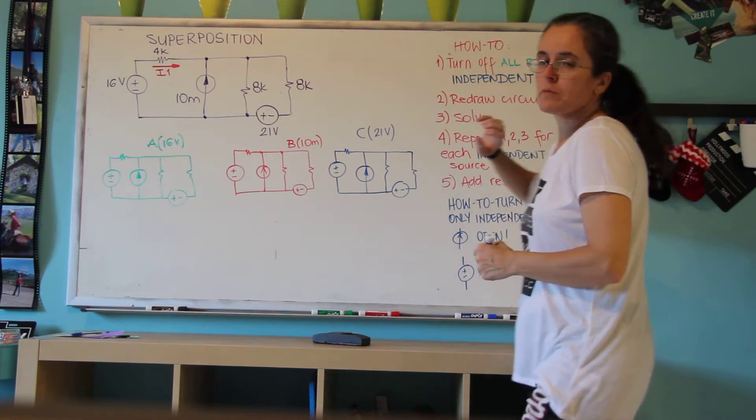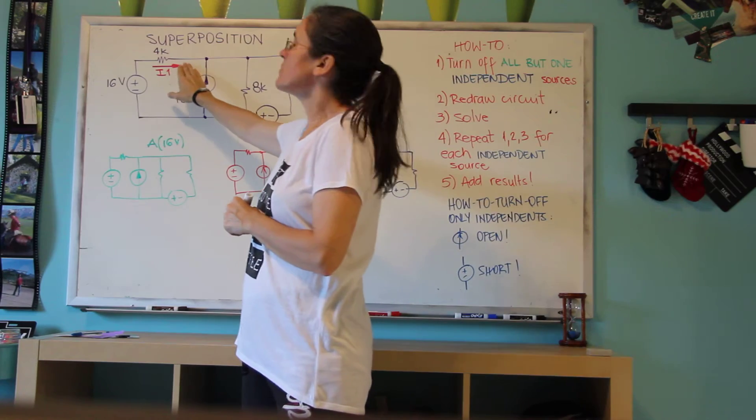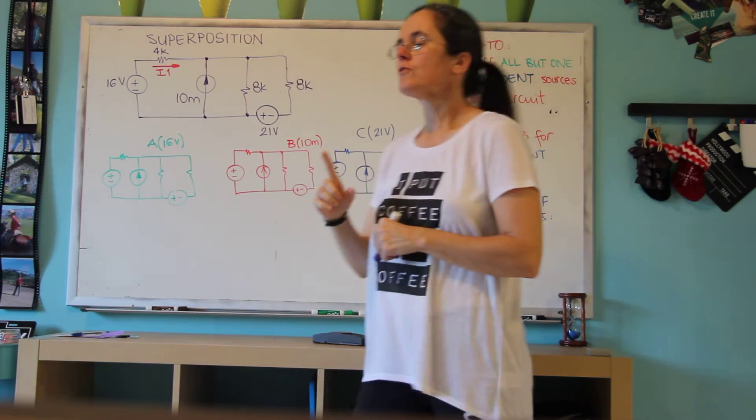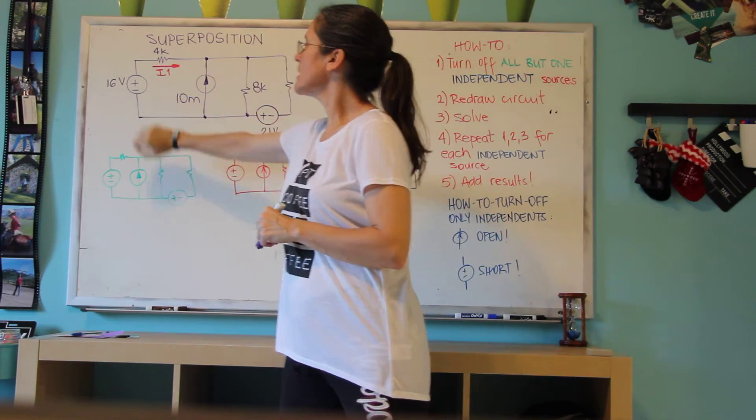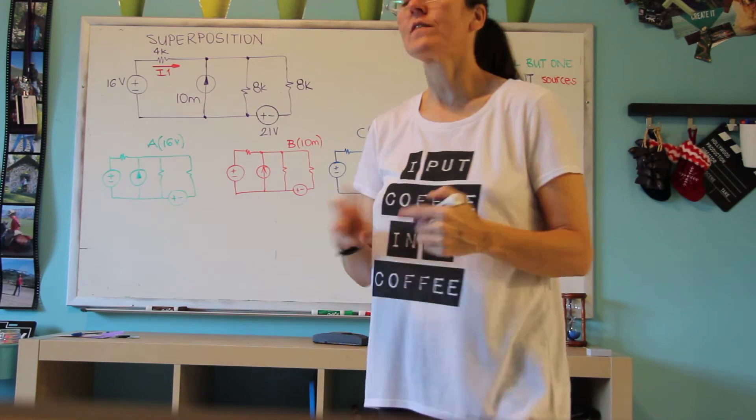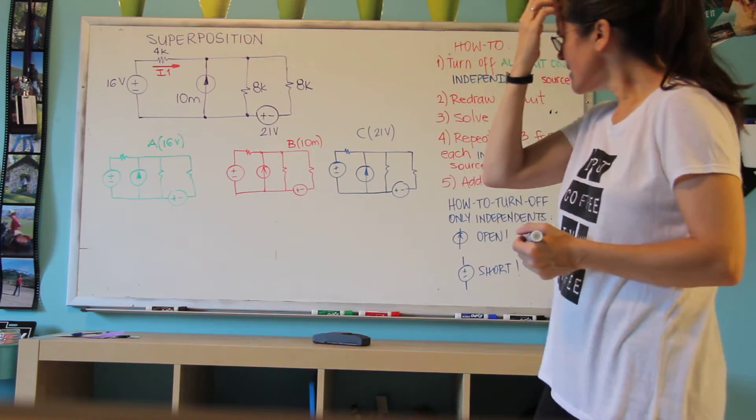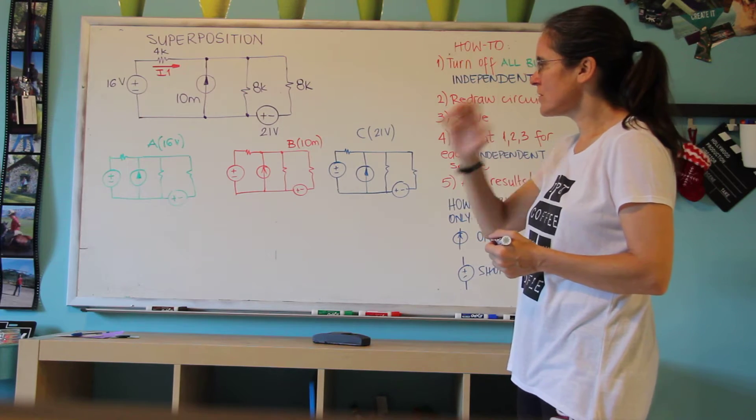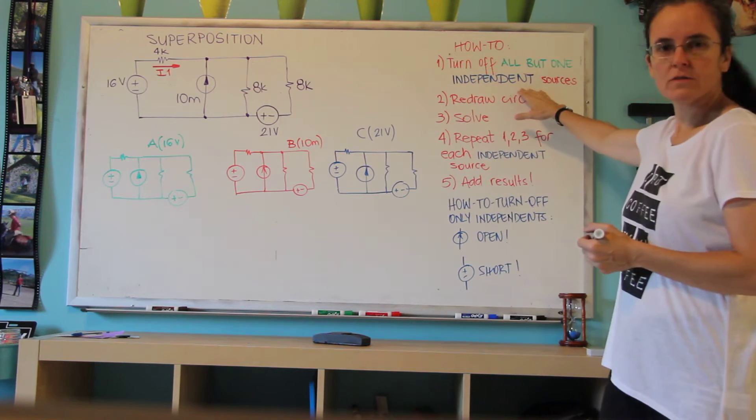So the idea of superposition is that we're going to find the current through a resistor as a function of first just this power supply, then this, then this. So we're going to write three simple circuits, each time turning off all but one source.